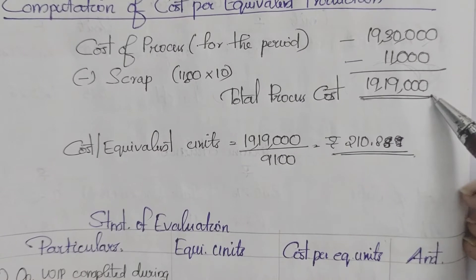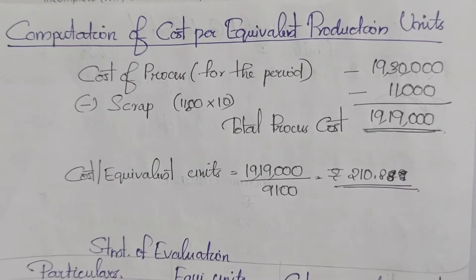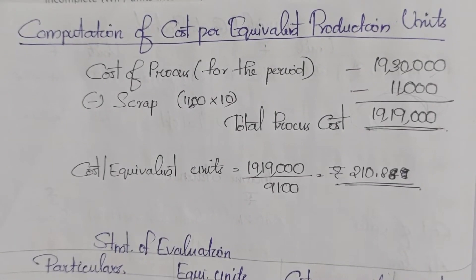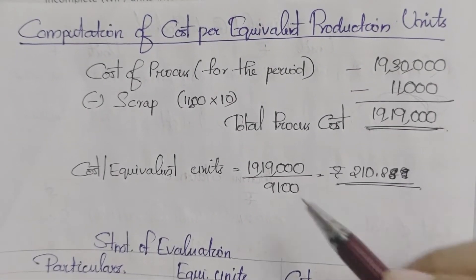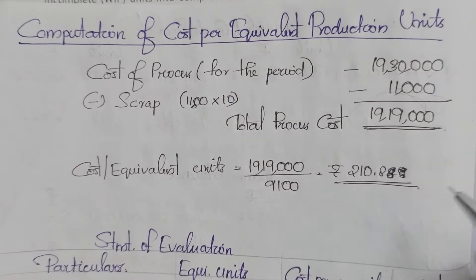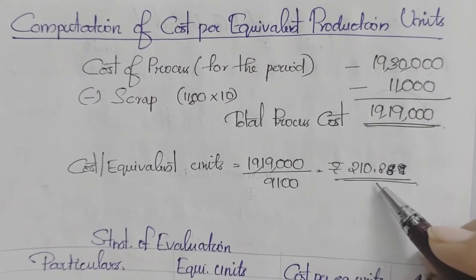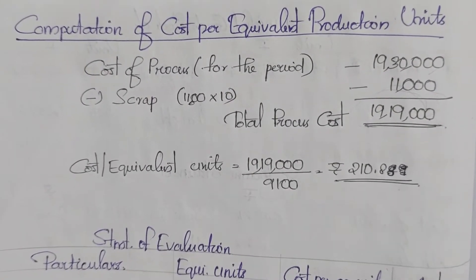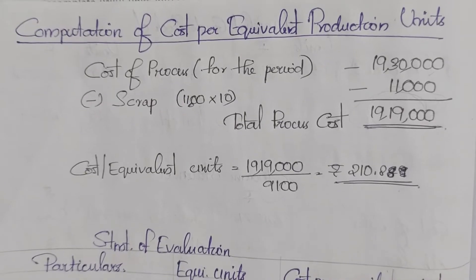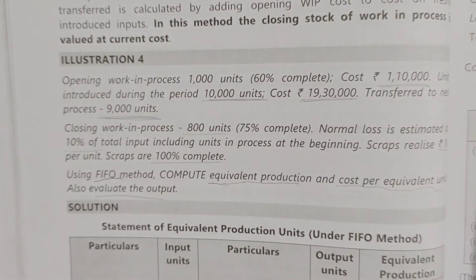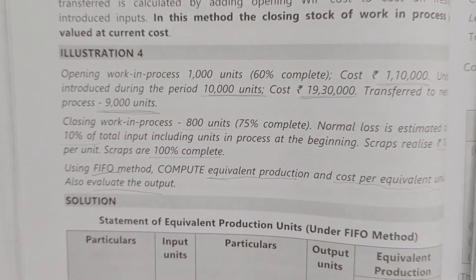Cost per equivalent unit = 19,19,000 divided by equivalent production units 9,100 = 210.88 rupees per equivalent unit. Now we prepare the statement of evaluation.